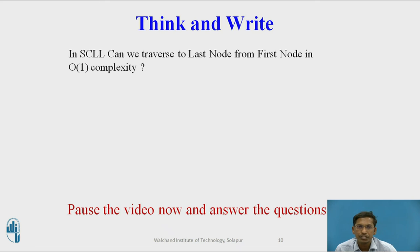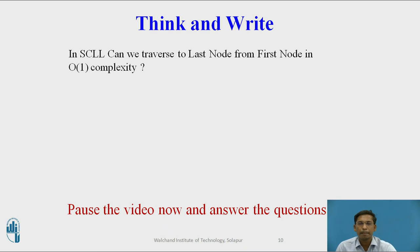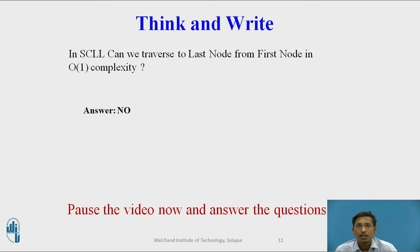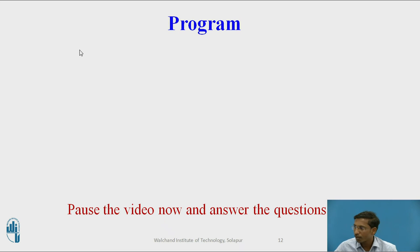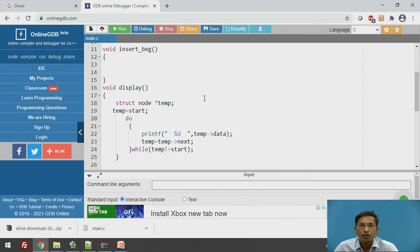You can pause and answer this question: In a singly circular linked list, can we traverse to the last node from the first node in O(1) time complexity? The answer is no. In a doubly circular linked list it is possible to reach the last node from the first node in O(1) using the previous pointer, but in a singly circular linked list you must traverse one by one.